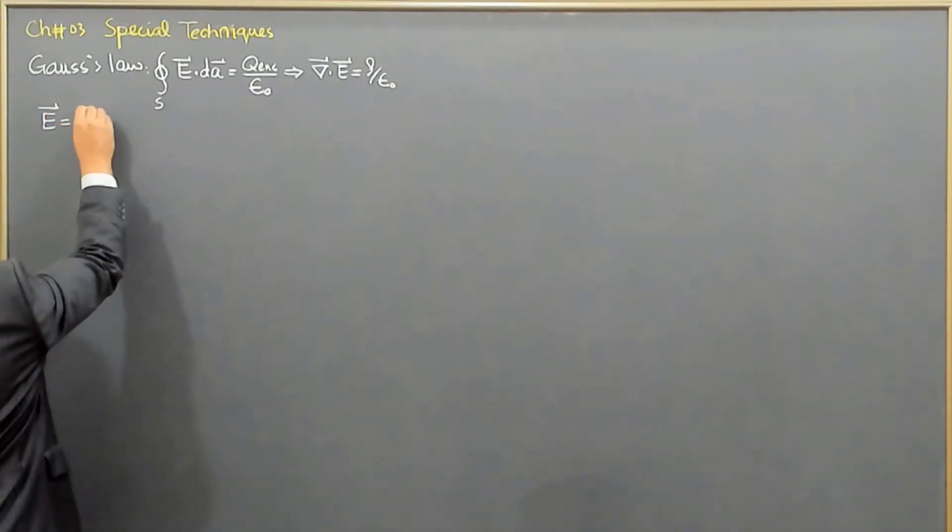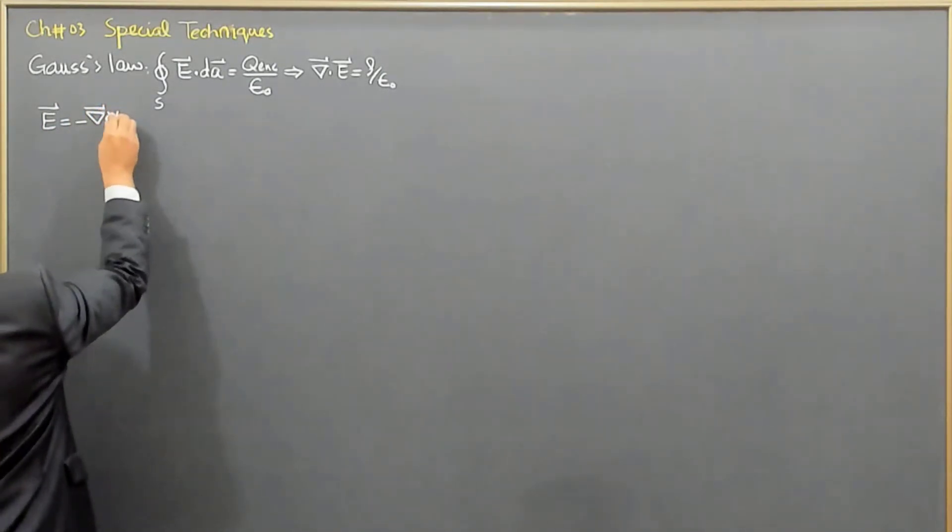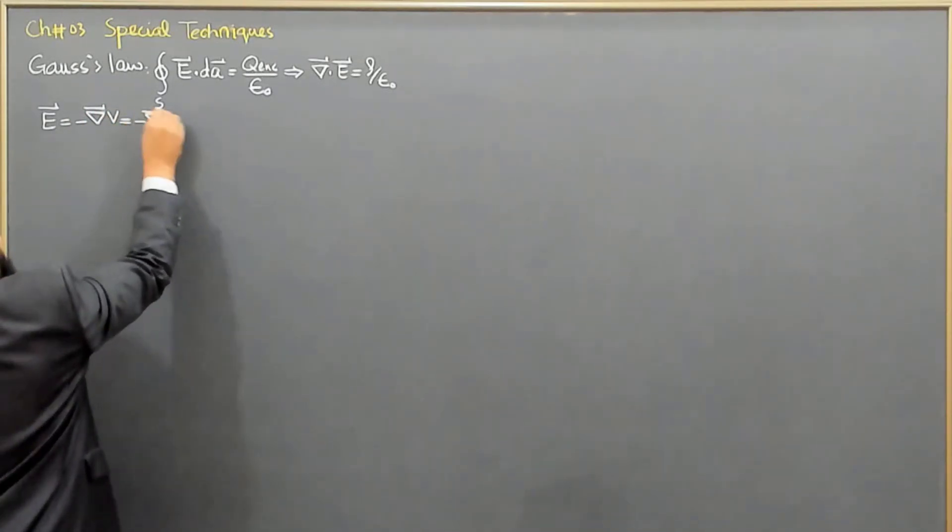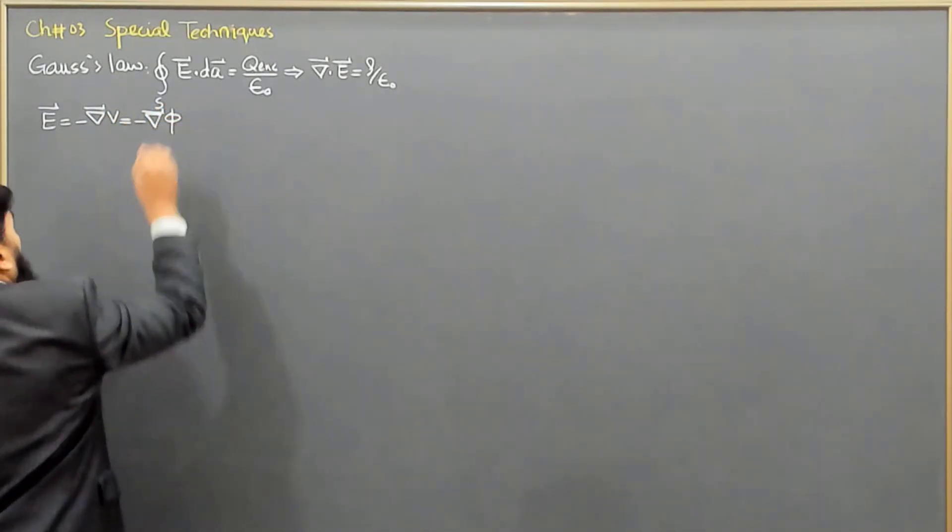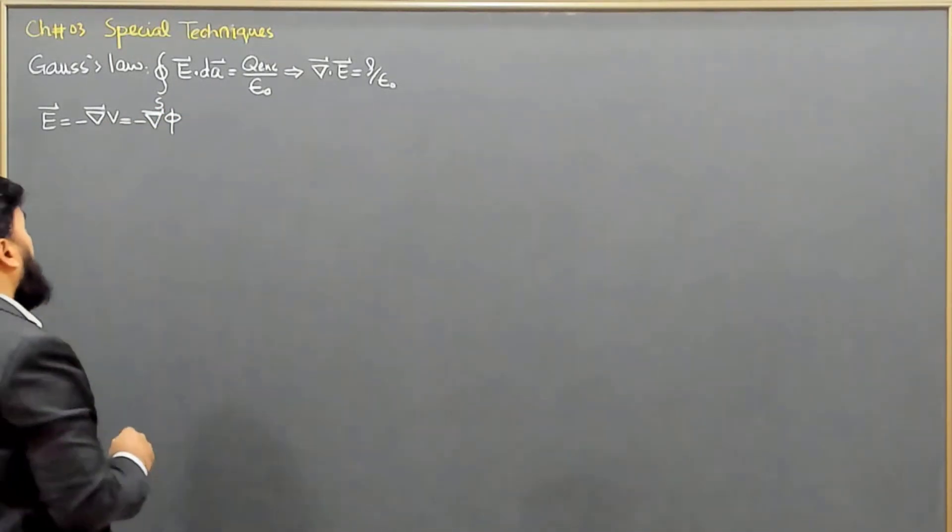we know that the electrostatic, we got it from the electrostatics, and now we will convert this one into the Poisson's equation. And as we know that electric field can also be written as minus gradient of V, gradient of potential. This V, V sometime, right, is phi. So, in your book, it is following V, so I will write V here.